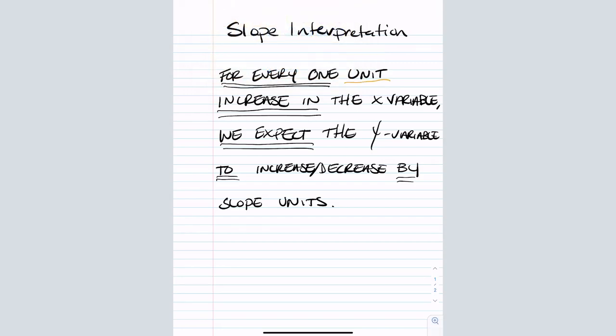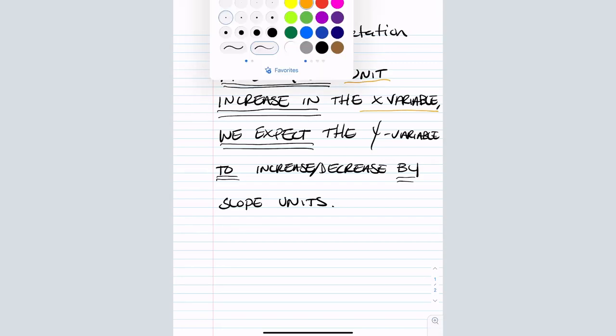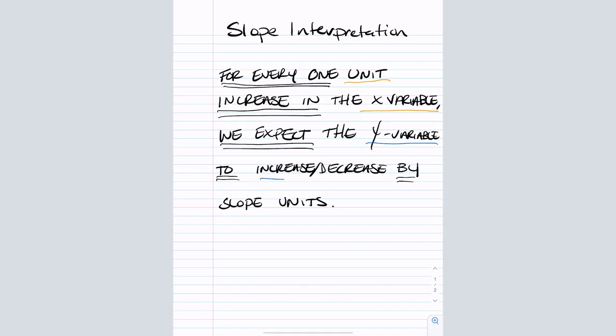So things that are underlined twice are things that will always be used or terms that will always be used. What's underlined in orange is what's specific to the x variable, and then what's underlined in blue is going to be what's specific to the y variable.